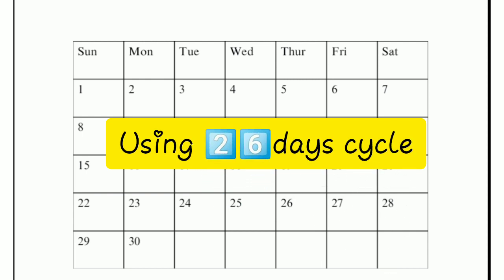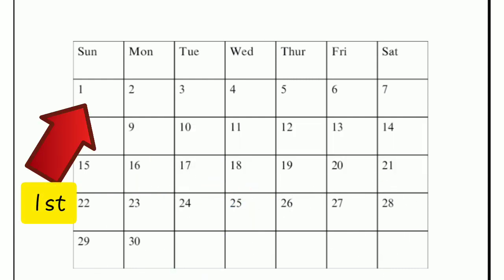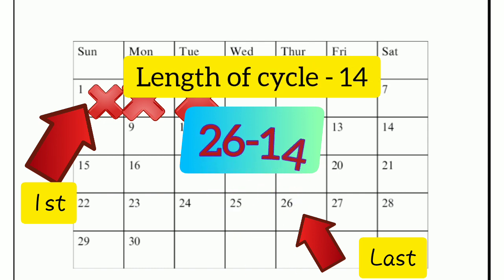So if you are taking the first day of the bleeding on your cycle to be the first day of your menstrual cycle, and then day number 26 is the last day of your cycle — that means if you're bleeding for one, two, three days — to get your ovulation date, take the last day of your cycle, which is 26, then minus 14 days.